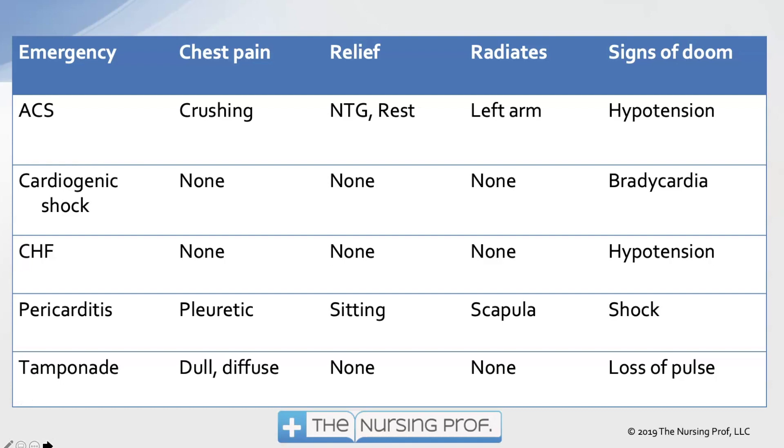With tamponade, we have dull diffuse kind of pain. There may not be other symptoms, and the sign of doom is obviously loss of pulse.